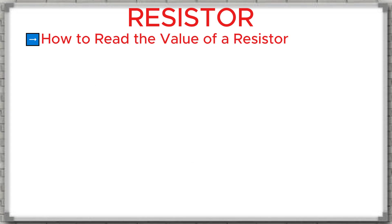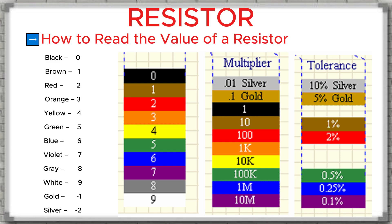How to read the value of a resistor. The way we read a resistor's value depends on the type of resistor. For resistors with colored bands on the body, we use an international color code. Read slowly and memorize it. Please memorize this table, because during repairs you will use it frequently.